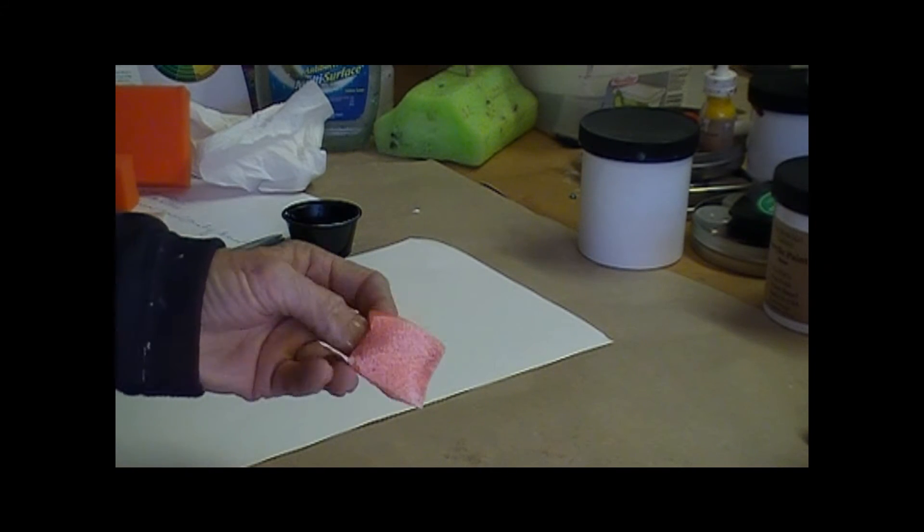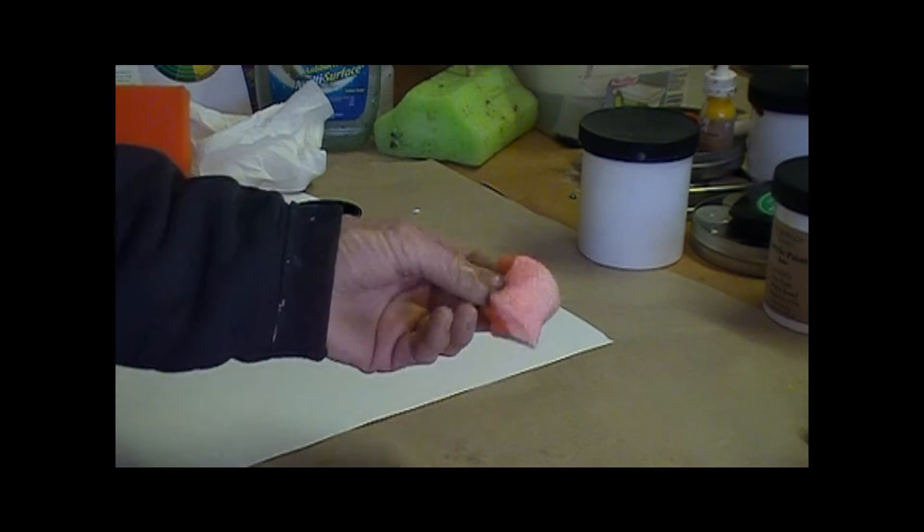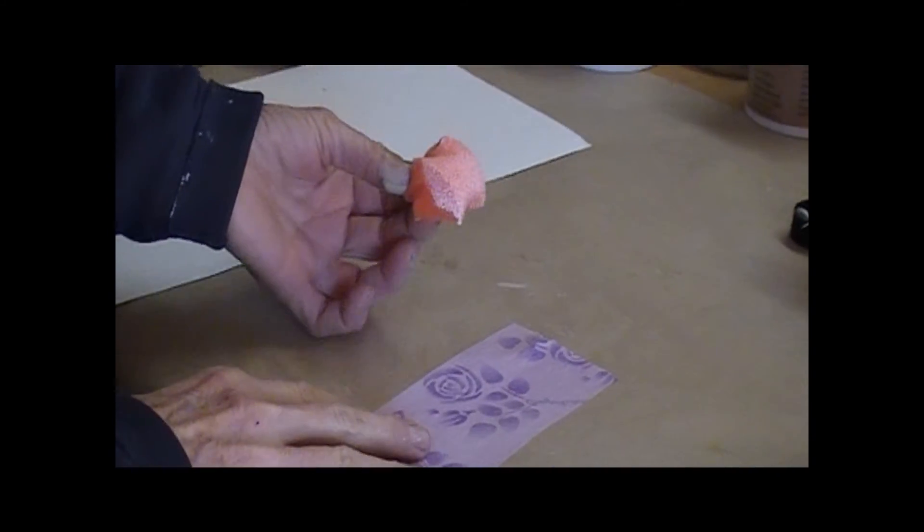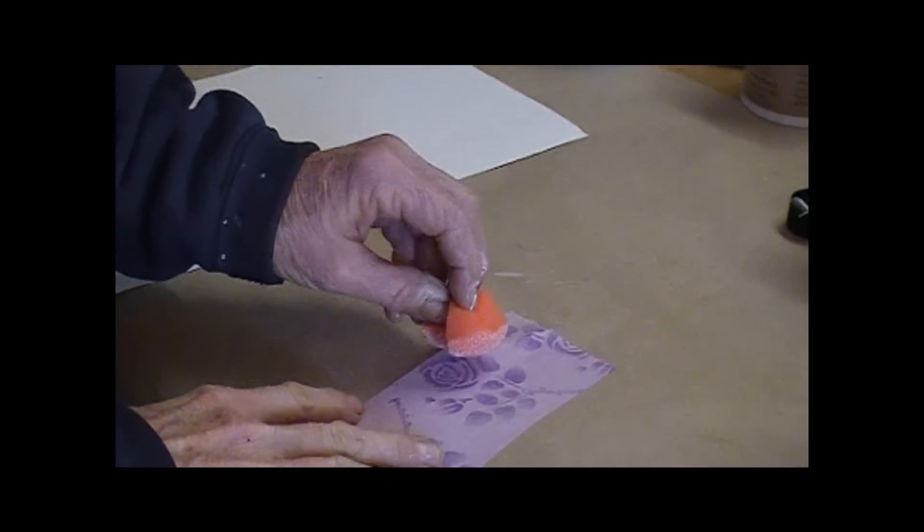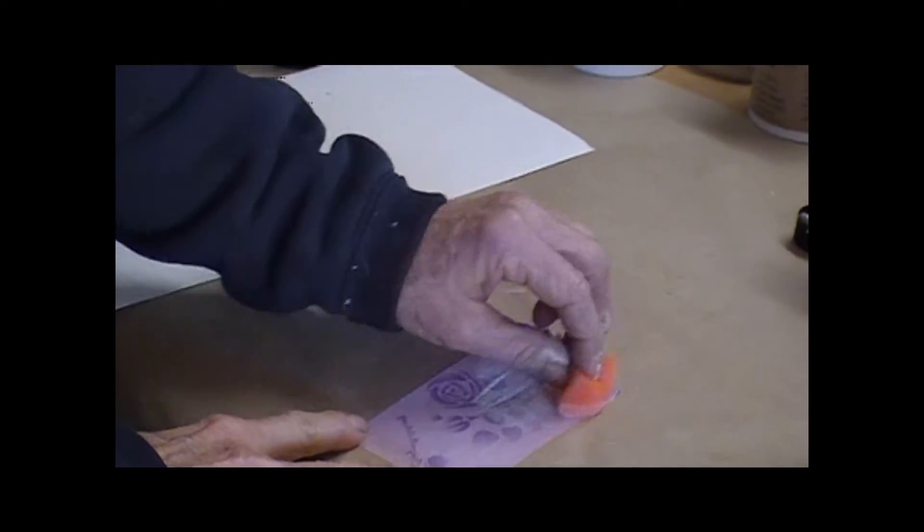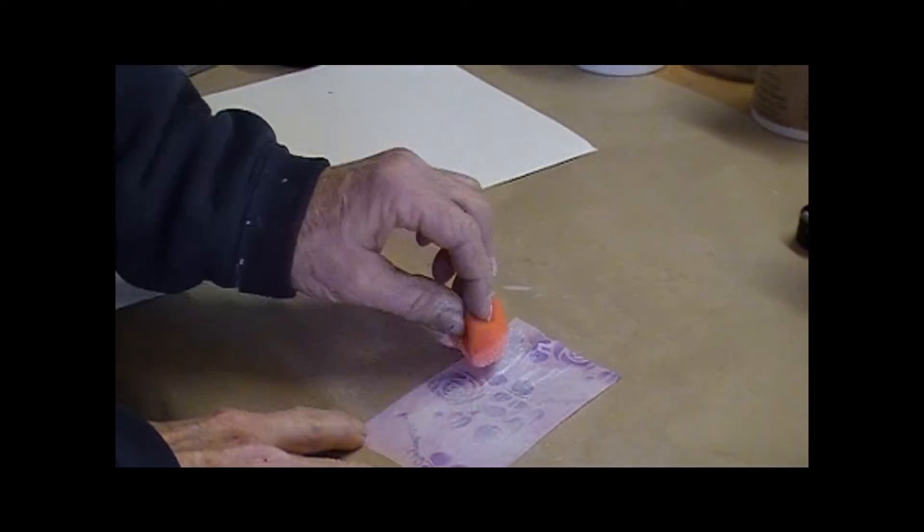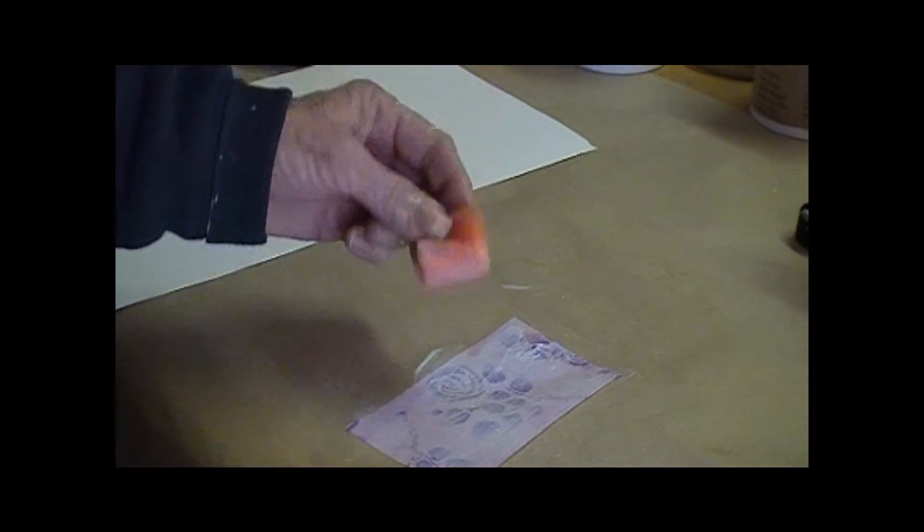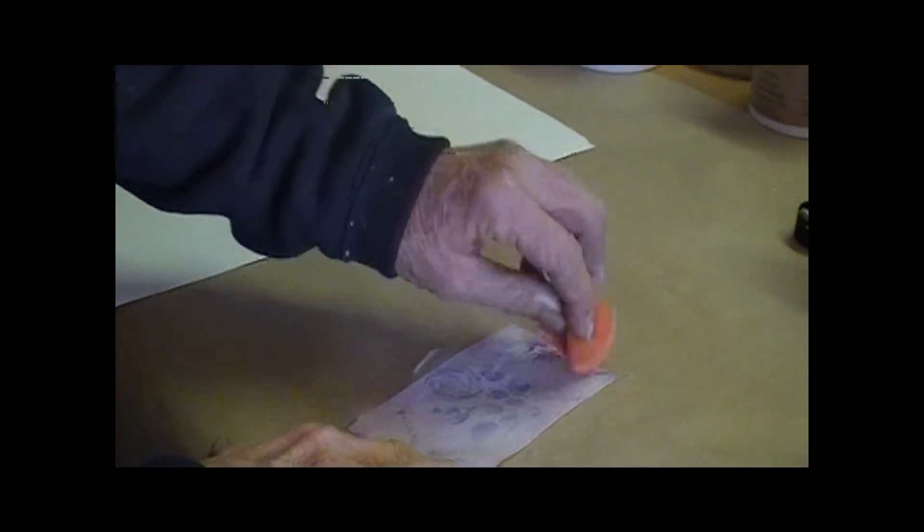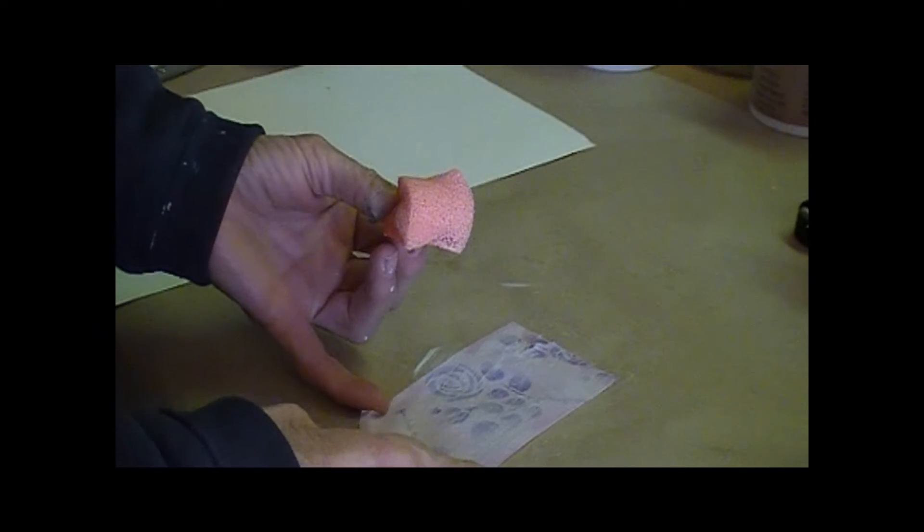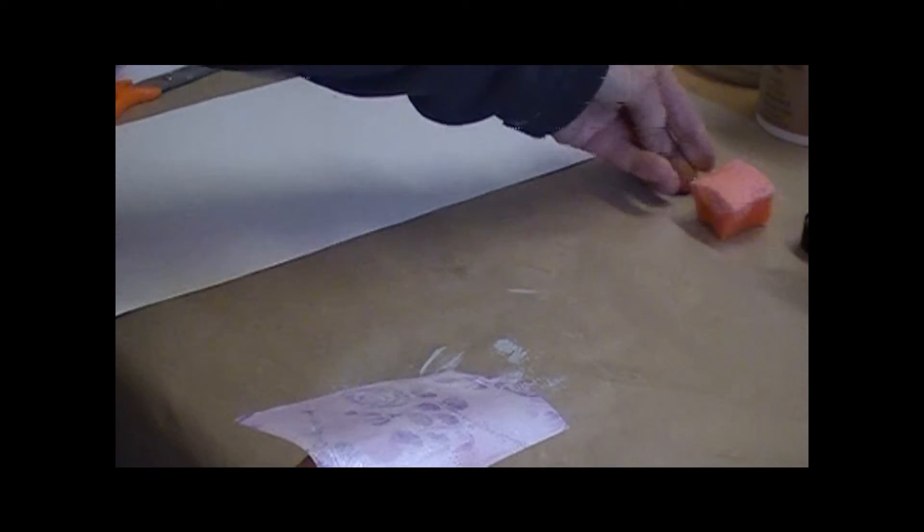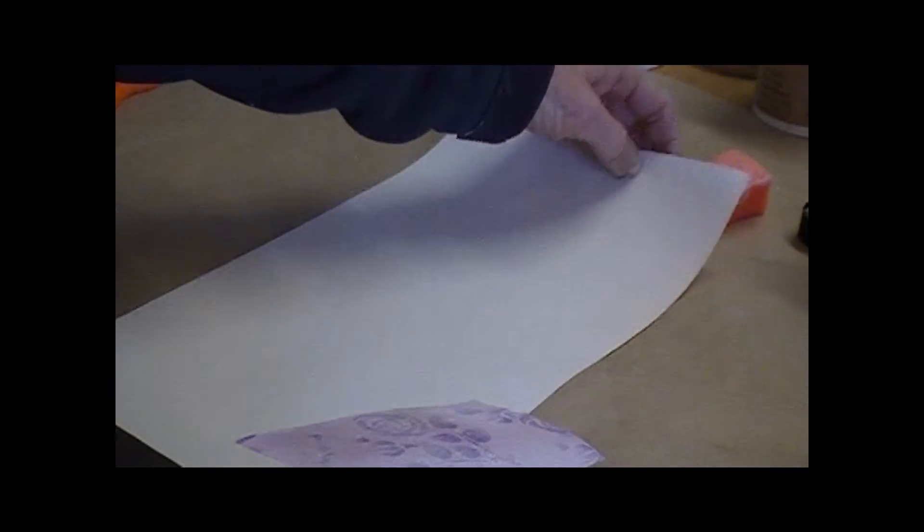Okay, while we're drying the stencil, I want to show you a couple other things that Tackifier does. We can put it on paper and do paper to paper. It acts like a glue and the nice thing about it is it doesn't glob up. As with the stencil, you put it on here. It's white and then it will become sticky and dry clear so that you can adhere it to any kind of paper.